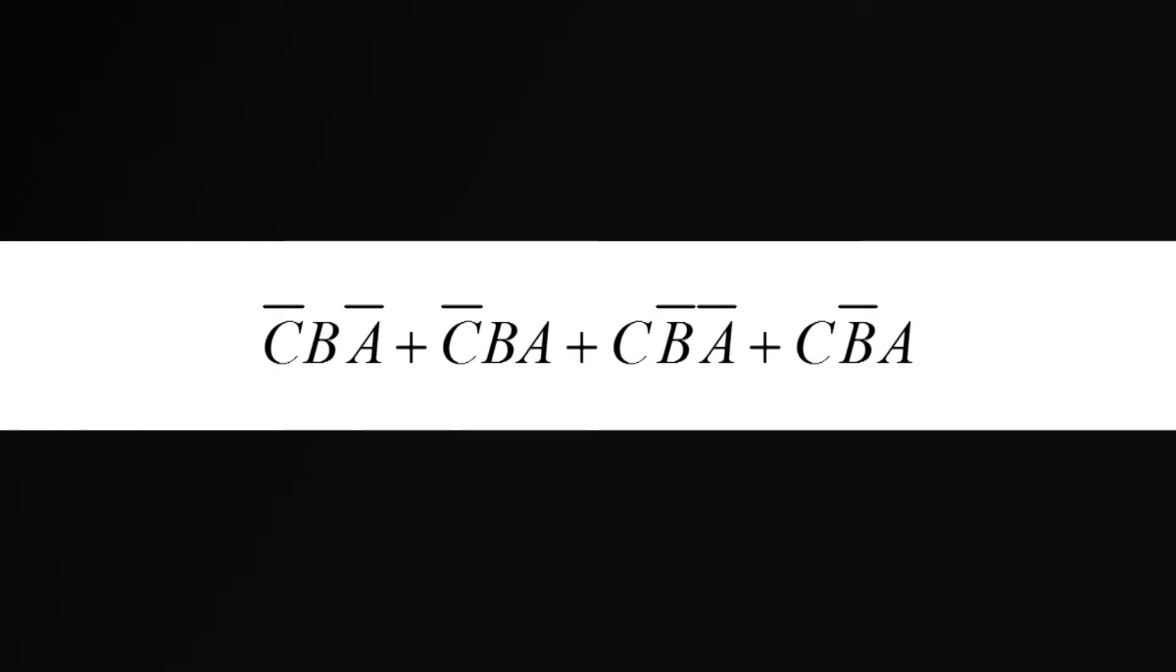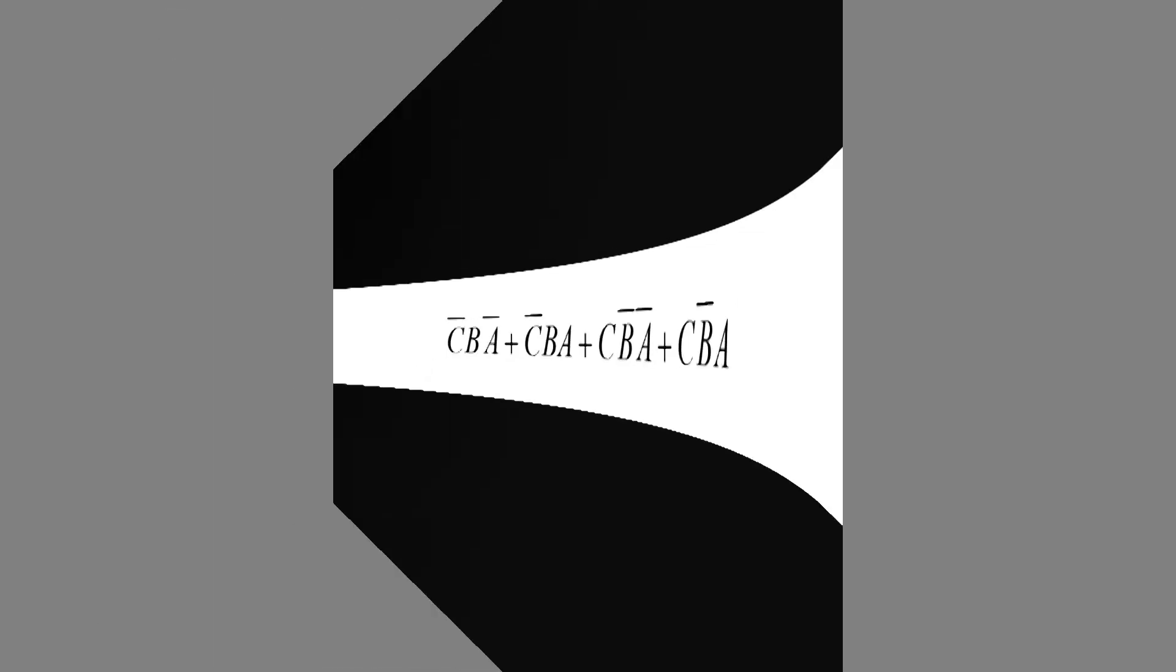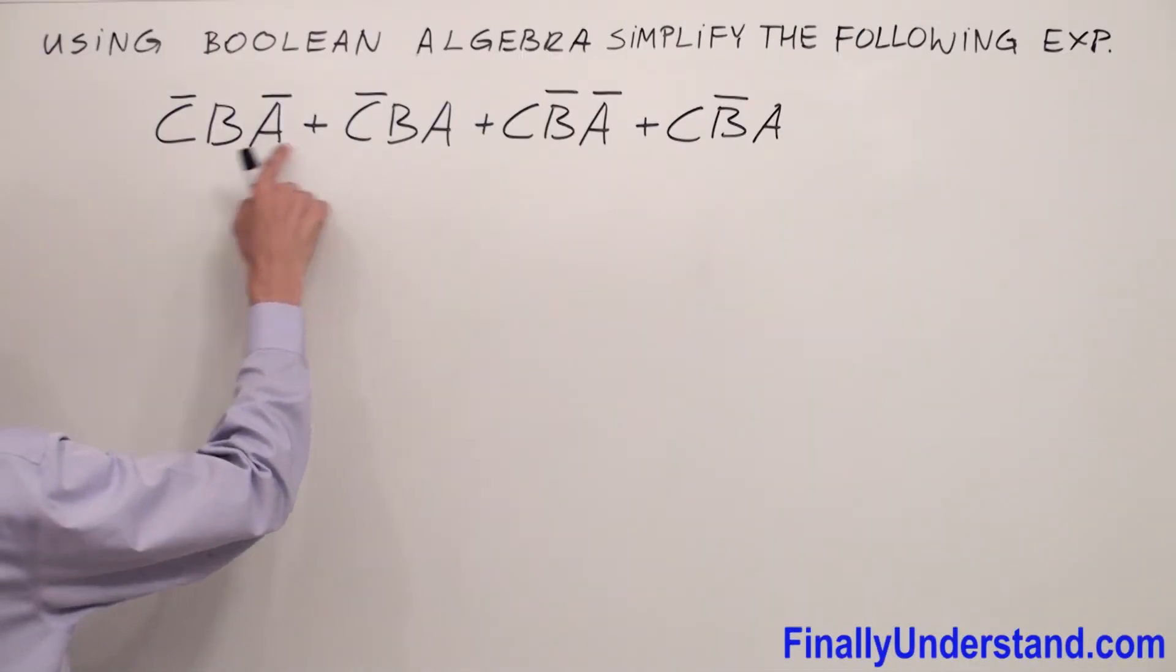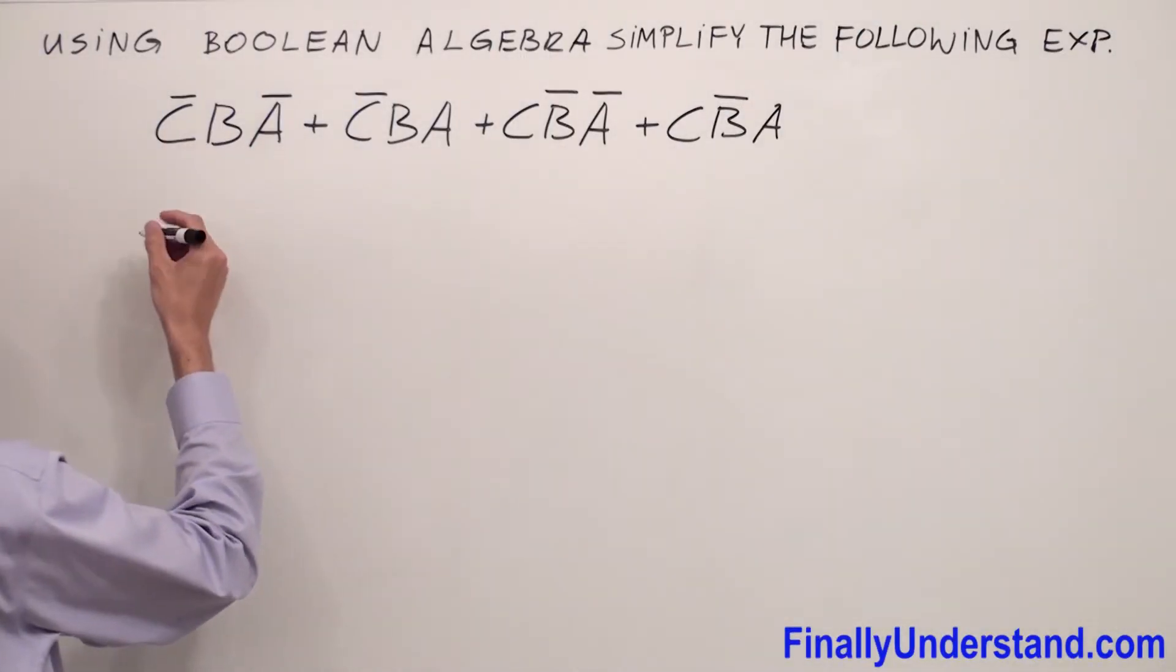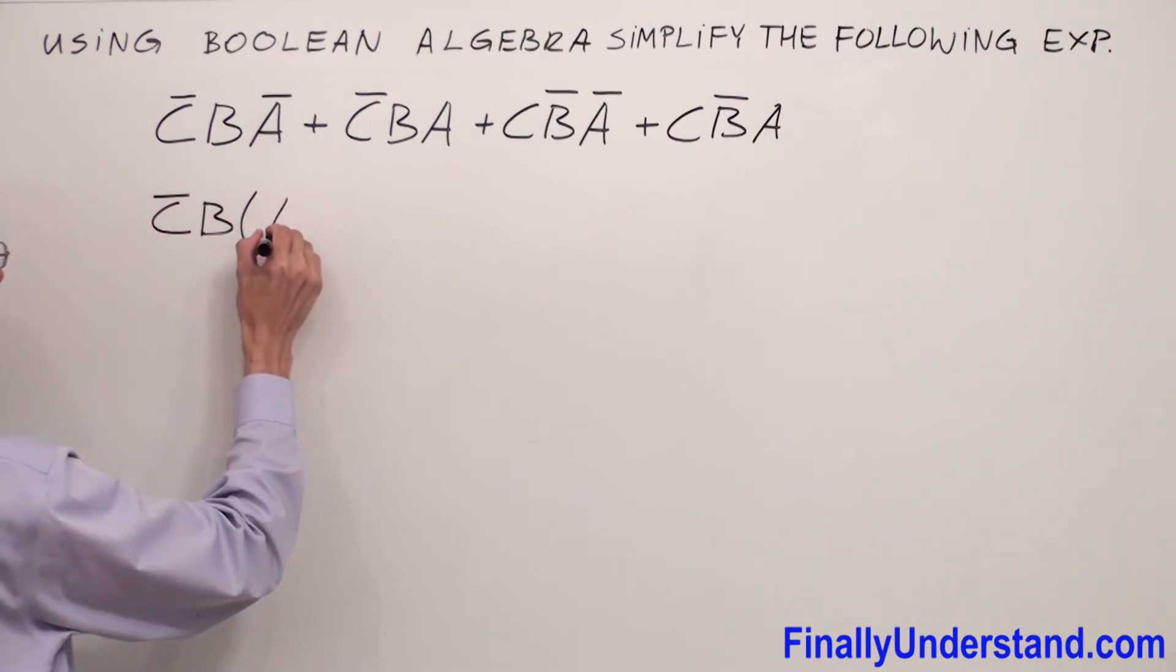Let's take a look at this example. From these two terms we can factorize CB̄. I have CB̄ and inside of the parentheses I have Ā or A.